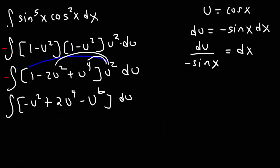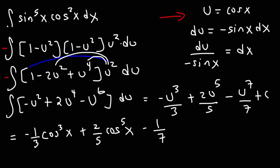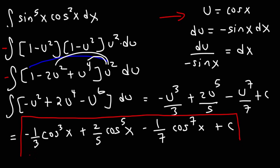Now let's find the antiderivative of each term: negative u to the third over 3, plus 2u to the fifth over 5, minus u to the seventh over 7, plus c. Replacing u with cosine, the final answer is negative 1/3 cosine to the third power plus 2/5 cosine to the fifth power minus 1/7 cosine to the seventh power plus c. That is the antiderivative of sine to the fifth x times cosine squared x.